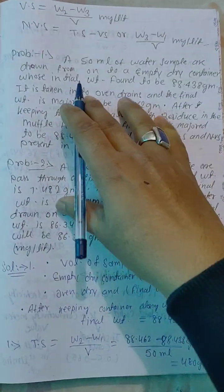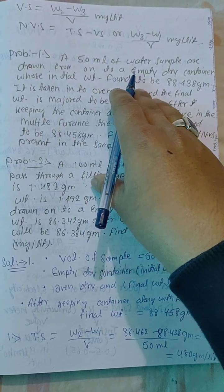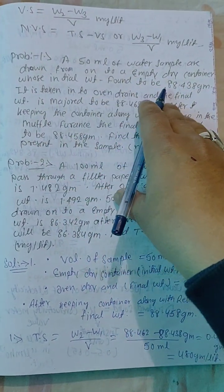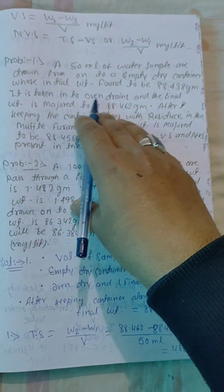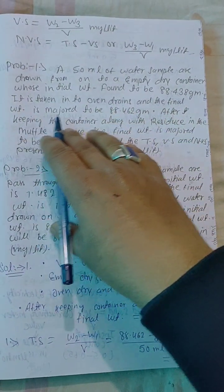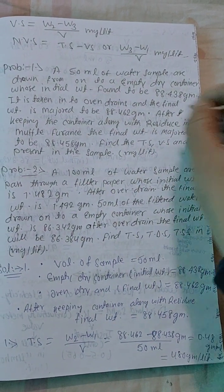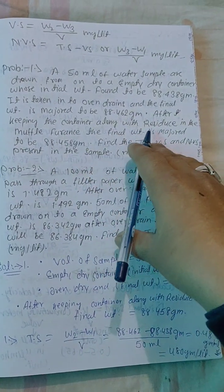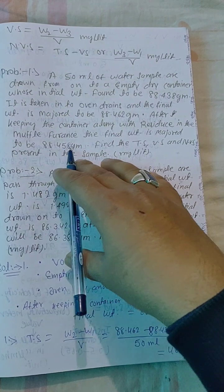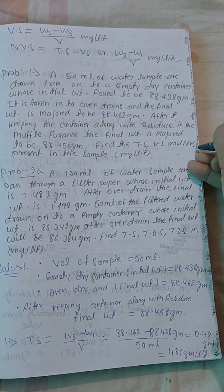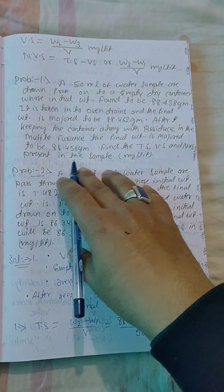Problem 1: 50 ml of water sample is drawn into an empty dry container whose initial weight is found to be 88.438 g. It is placed in an oven dry method and the final weight is measured at 88.462 g. After keeping the container with the residue in the muffled furnace, the final weight is measured at 88.458 g. Find the total solid, volatile solid, and non-volatile solid present in the sample.